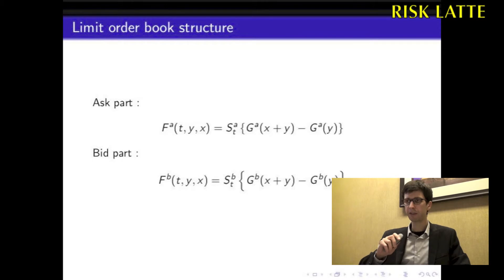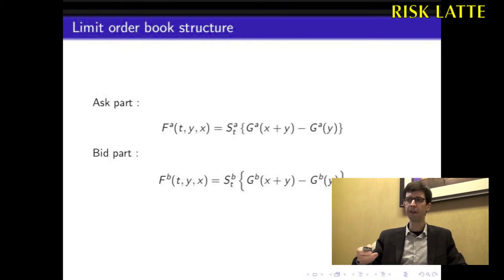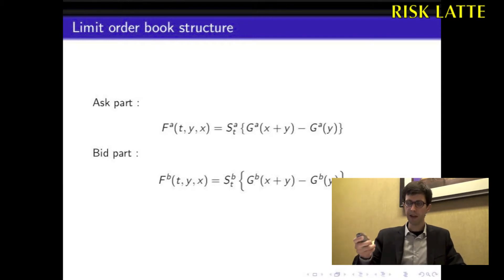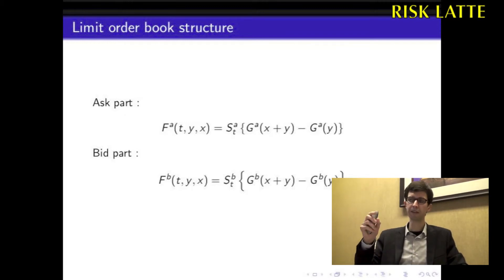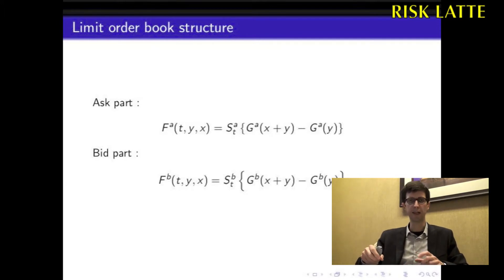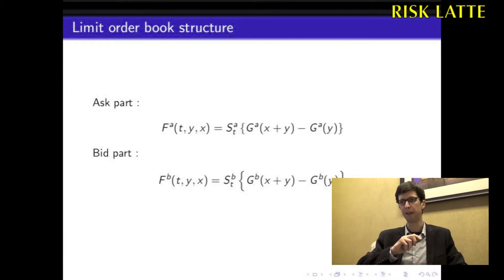That was for the ask part. The bid part is similar — we name it FB(T, Y, X). It is the second geometric Brownian motion times the difference GB(X + Y) minus GB(Y). Once again, X is the size of the transaction — for the ask it was the size of a buy, and for the bid part X is the size of a sale. Y is again the level of the impact.